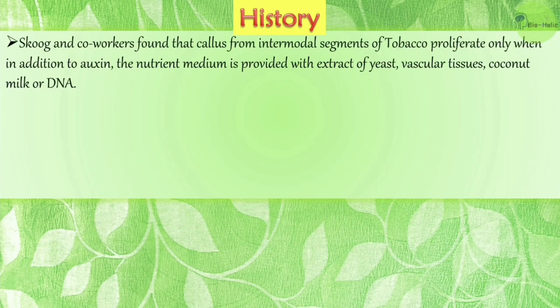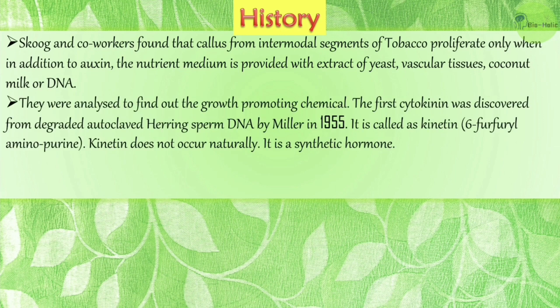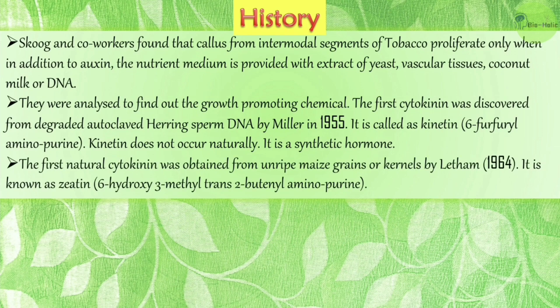In the historical background, Skoog and his co-workers found that callus from intermodal segments of tobacco proliferates only when, in addition to auxin, the nutrient medium is provided with extract of yeast, vascular tissues, coconut milk, or DNA. These were analyzed to find the growth-promoting chemical. The first cytokinin was discovered from degraded autoclaved herring sperm DNA by Miller in 1955, called kinetin — that is, 6-furfuryl aminopurine. However, kinetin does not occur naturally; it is a synthetic hormone.